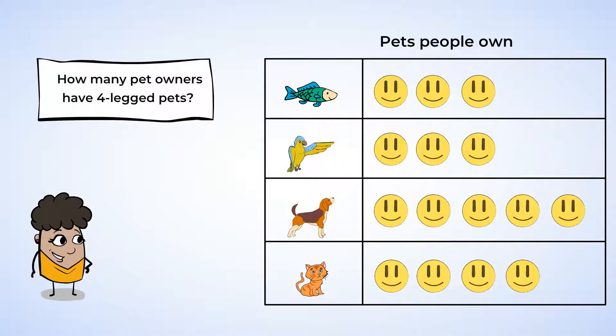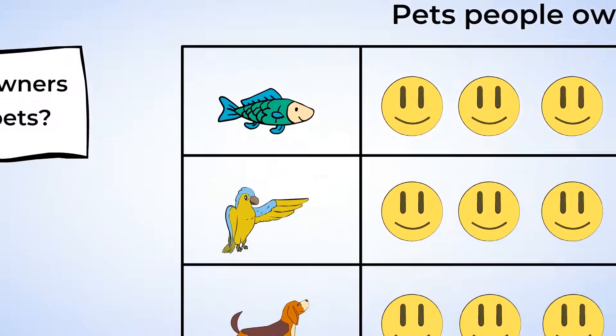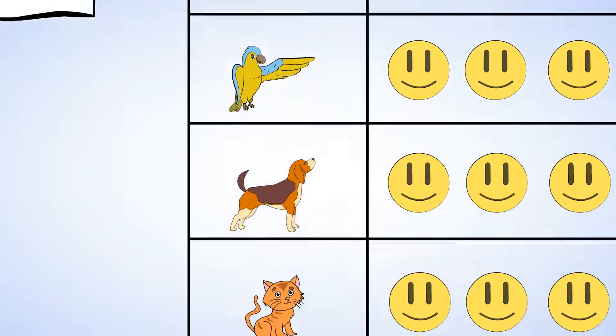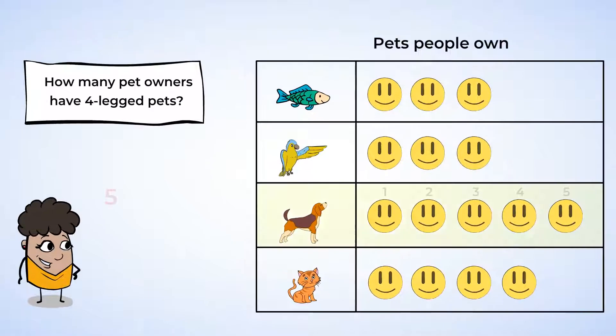How many pet owners have four-legged pets? We'll have to do some thinking about this one. Fish don't have any legs, and birds only have two legs. But both cats and dogs have four legs, so we'll need to add to find the answer. Five dogs plus four cats equals nine four-legged animals. So, nine people own a four-legged animal. Nice work!